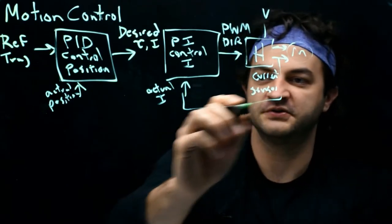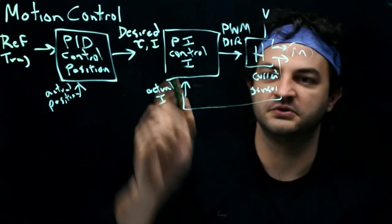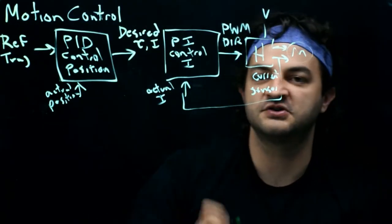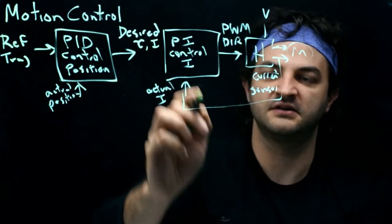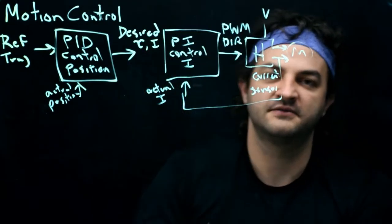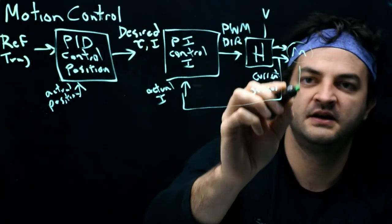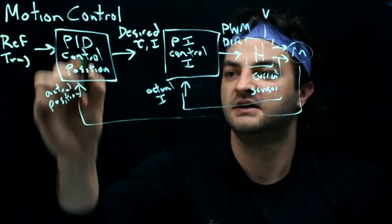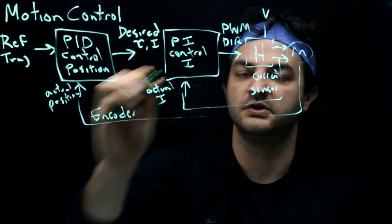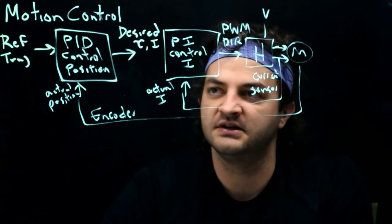That sensor will produce a voltage — that is my actual current. My microcontroller will read that voltage, interpret it through a calibration equation to know what the current is based on the voltage, and the controller will control that amount of current. That will make the motor spin. When the motor spins, it moves. My encoder will read the position of the motor and feed back into the motion controller.